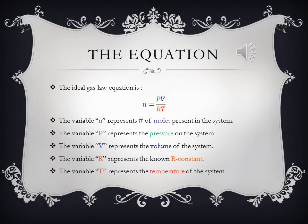In order to solve a problem like this, we will need to use the ideal gas equation. This is written as n equals PV over RT. An easy way to remember this is PV equals nRT or pervNert.